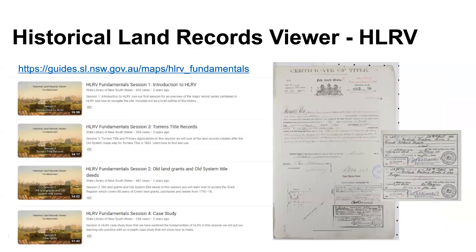HLRV — historical land records viewer — which we all love so much. I'm not going to go into great detail about how to use HLRV as it can be quite complex, but on our website we have four webinars each about half an hour long. They go through the introduction to HLRV, how to search the Torrens title records, go through land grants and old system titles, and there's a case study at the end as well. Just out of interest, the titles shown here were for the Hurstville house of the Moores — showing when they purchased it and the details from the sale in 1930.